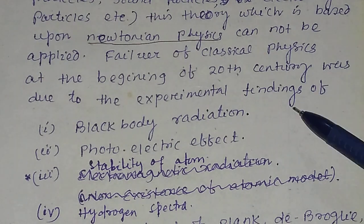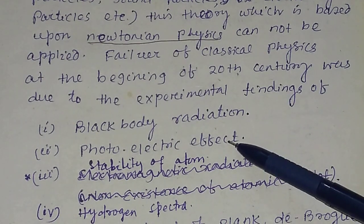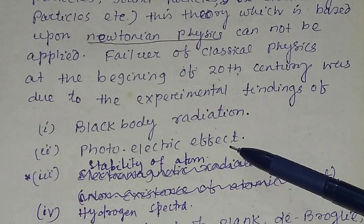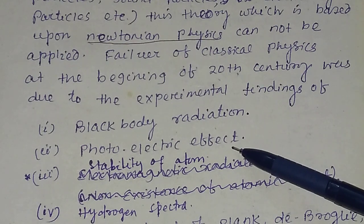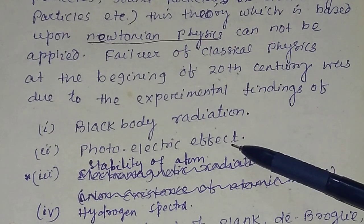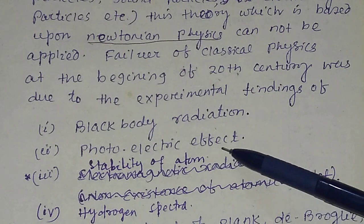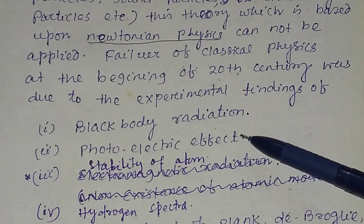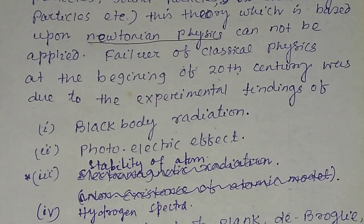Classical theory also failed to explain the experimental findings of the photoelectric effect — the experiment basically done by Hertz. The experimental findings of the photoelectric effect could not be explained by classical theory.